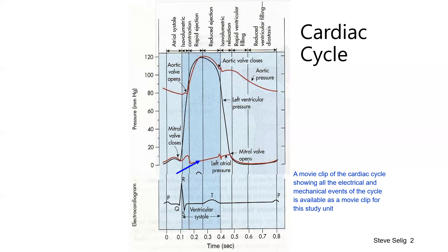During systole, the left atrium has a closed mitral valve but blood is still returning from the lungs via the right heart, so there is a pretty much linear increase in pressure in the left atrium during ventricular systole. There is a small blip on the left atrial pressure trace at the point the aortic valve closes — a reflection of that pressure event. When ventricular pressure drops to equal left atrial pressure, the mitral valve opens passively.